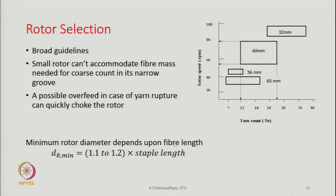The minimum rotor diameter depends upon the fiber length we want to use. The minimum diameter of the rotor should be 1.1 to 1.2 times the staple length of the fiber. If the fiber length is fixed, the rotor diameter should be at least 1.1 to 1.2 times the staple length — if the diameter is more than that there is no problem. This is because of wrapper fiber generation: if the rotor is smaller than 1.1 or 1.2 times the staple length — for example, for a 30 mm staple length a 33 to 36 mm rotor should be chosen — otherwise there will be too many wrapper fibers and yarn quality will suffer.